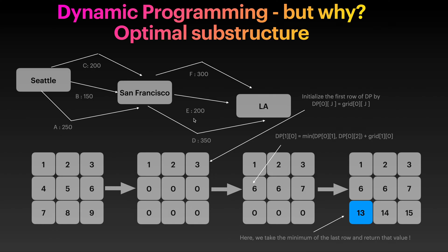What is optimal substructure? To find the shortest path from Seattle to LA, you first find the shortest path from Seattle to San Francisco, then find the shortest path from San Francisco to LA, and add them up. That's what we mean by optimal substructure. Obviously, if there is a direct path from Seattle to LA, this problem would not have optimal substructure, so be careful about that.